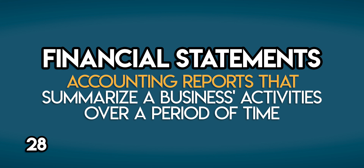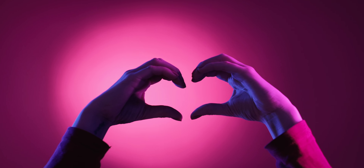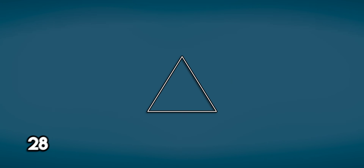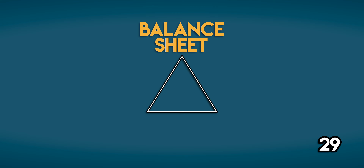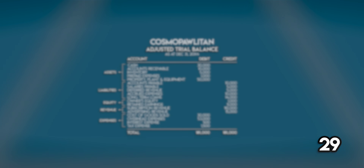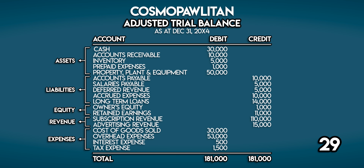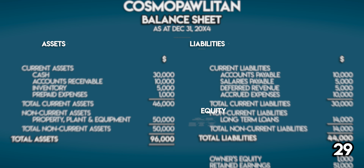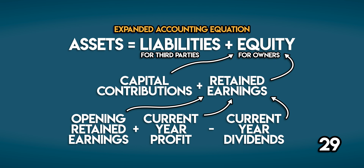Financial statements are accounting reports that outline the financial activities of a business over a period of time. They give insight into its financial health and help investors, lenders, and creditors make informed decisions. There are three main financial statements. First, the balance sheet, also known as the statement of financial position. The balance sheet takes figures from every account in the trial balance and gives us a snapshot of a business's assets, liabilities, and equity at a single point in time — essentially a snapshot of the accounting equation.